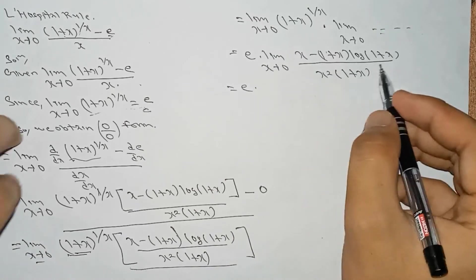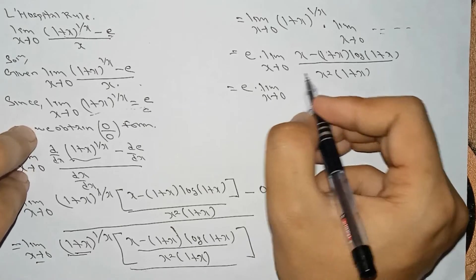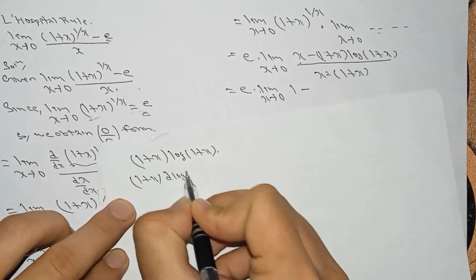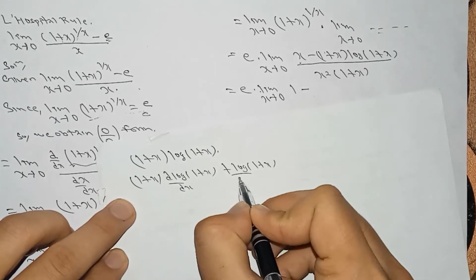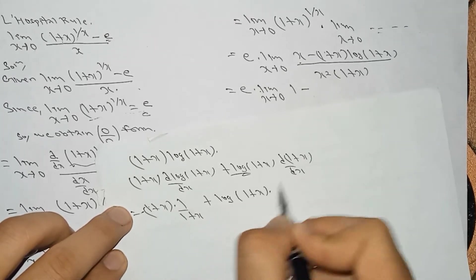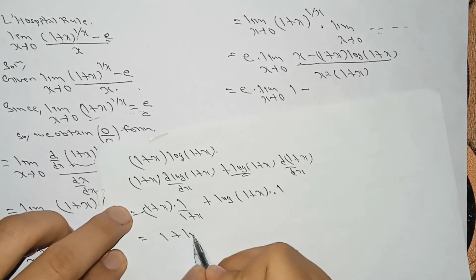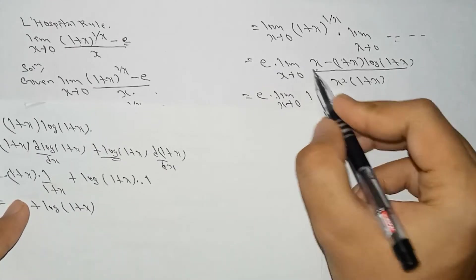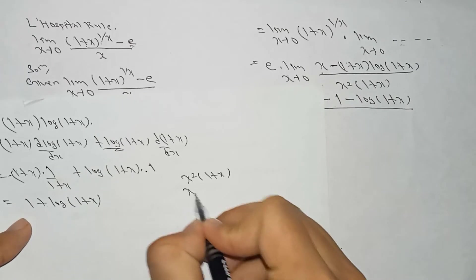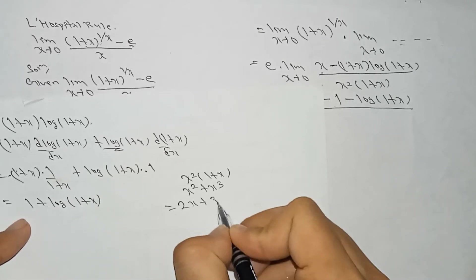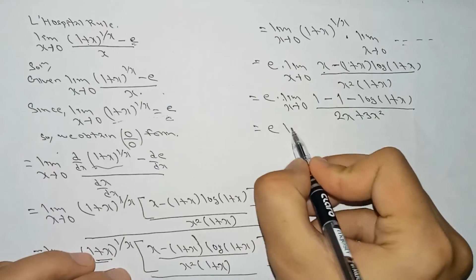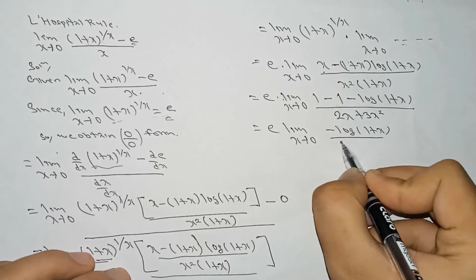Now we have to differentiate this remaining term. The differentiation of x is 1, and we differentiate (1 plus x) log(1 plus x) using the product rule: (1 plus x) times d[log(1 plus x)]/dx plus log(1 plus x) times d(1 plus x)/dx. This becomes (1 plus x)/(1 plus x) plus log(1 plus x) times 1, which is 1 plus log(1 plus x). So subtracting gives minus log(1 plus x) in the numerator. The denominator x squared(1 plus x) equals x squared plus x cubed, whose derivative is 2x plus 3x squared. So it becomes e times limit x tends to 0 of [minus log(1 plus x)] divided by (2x plus 3x squared).